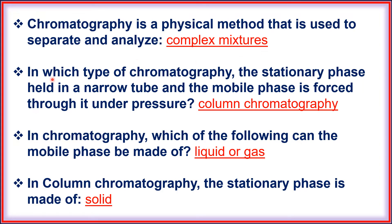In which type of chromatography is the stationary phase held in a narrow tube and the mobile phase is forced through it under pressure? That is called column chromatography.